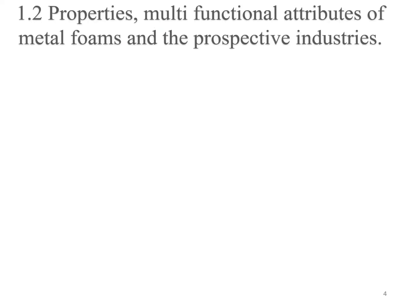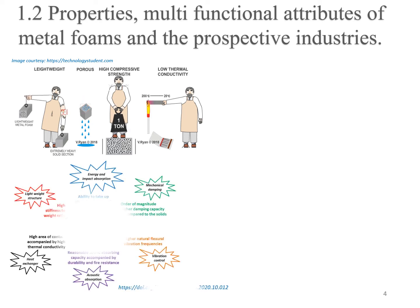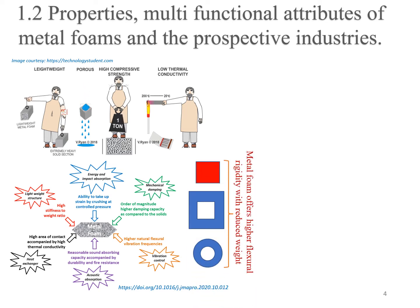In order to realize the significance of metal foam in the current industrial arena, it is important to understand what properties this material has to offer. It is lightweight, it is porous, it exhibits high compressive strength as well as low thermal conductivity, owing to which this material exhibits multifunctional capabilities. To understand how metal foam offers higher flexural rigidity with reduced weight, one can compare a solid rectangular block with a hollow rectangular block and a hollow circular block.